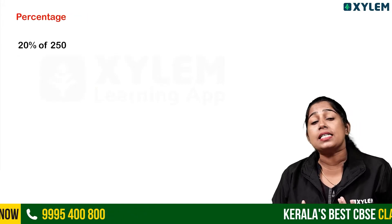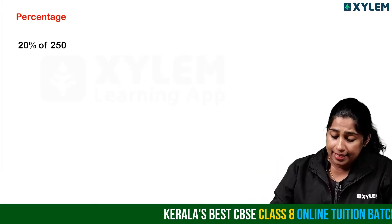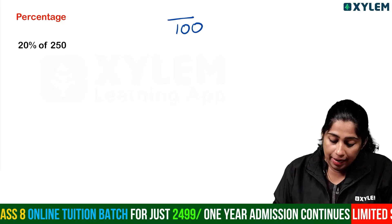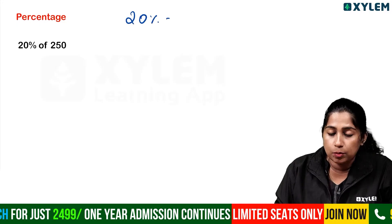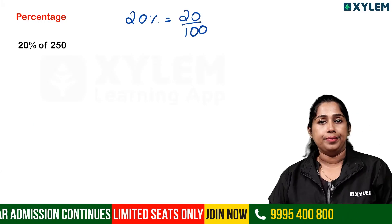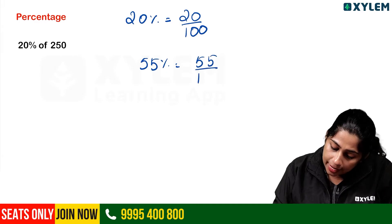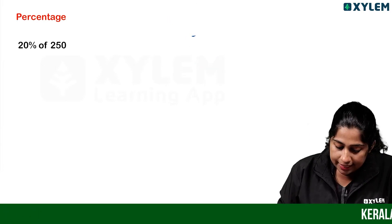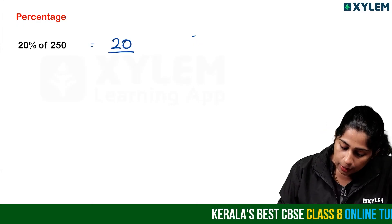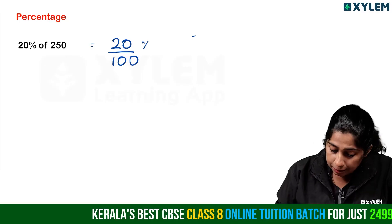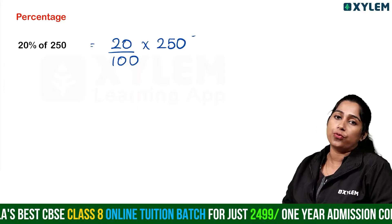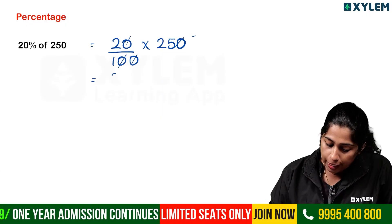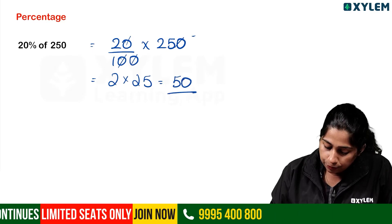If we compare using ratio, we can also show it as a percentage. Per cent means divided by 100. For example, 20 percentage means 20 by 100. 55 percentage means 55 by 100.